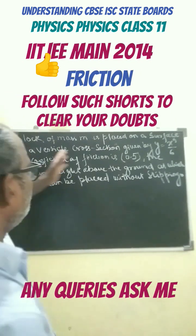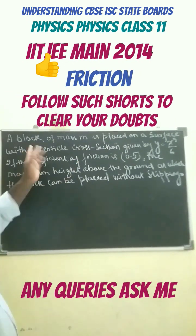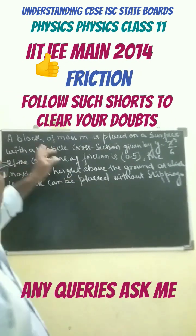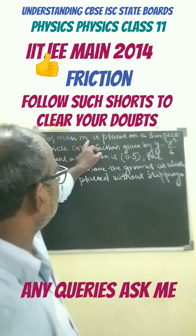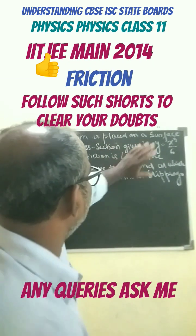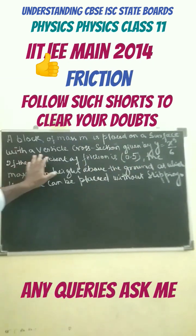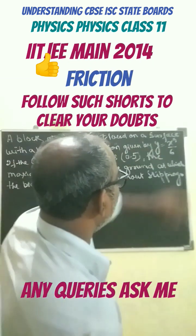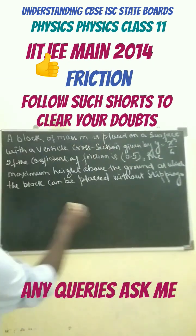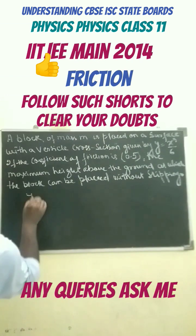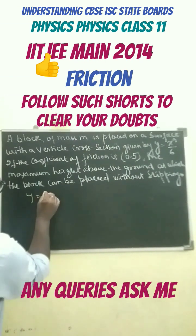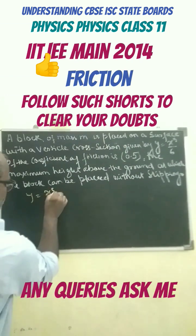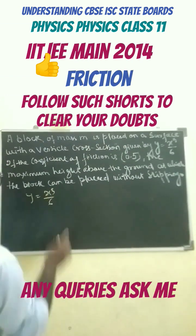This is a question from JEE. This question may clarify the quote. A block of mass m is placed on a surface with a vertical cross section given by y equals x cube by 6.